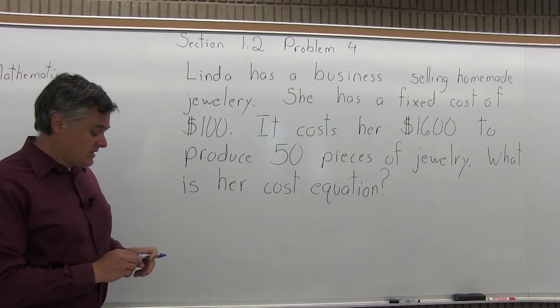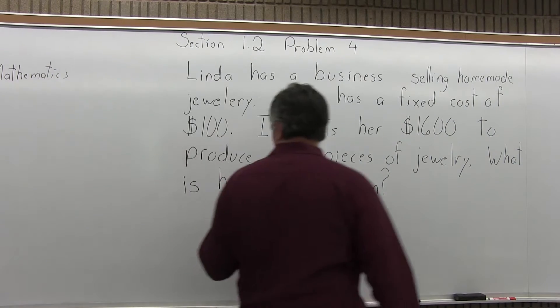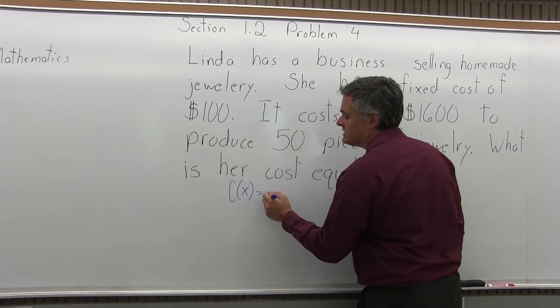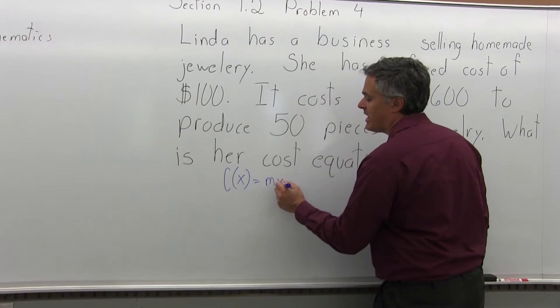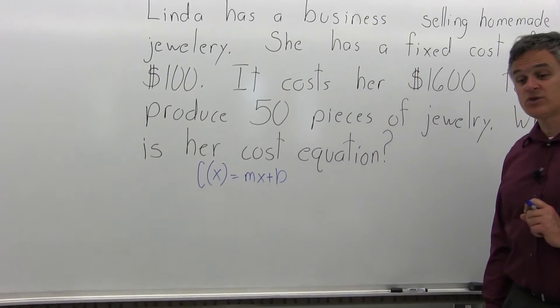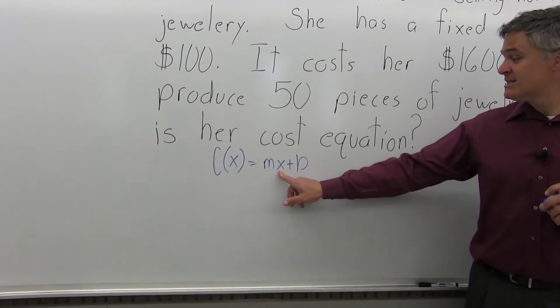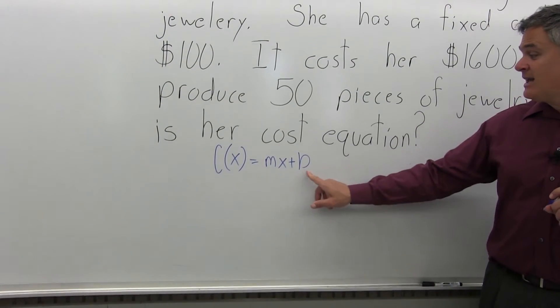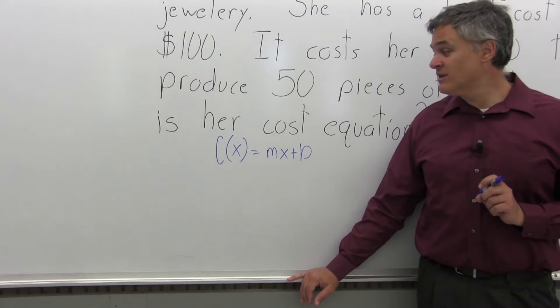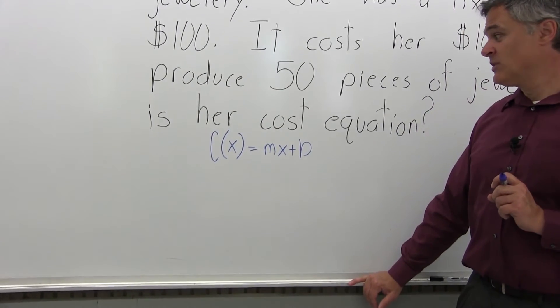To start this off, you have to remember the form of the cost equation is C(X) = MX + B, where M is the marginal cost or cost per item, X is the number of items, and B is the fixed cost, or in other words, the cost to stay in business even if no items are sold.